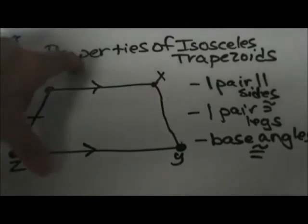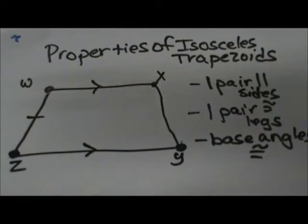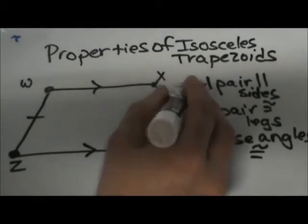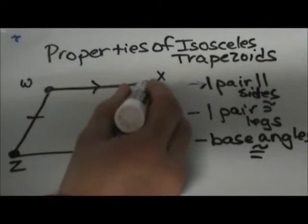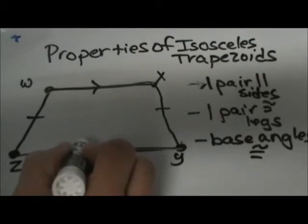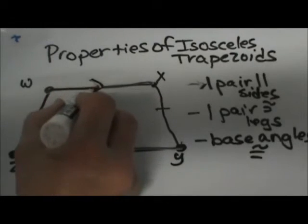It is a quadrilateral, meaning it has four sides, and a trapezoid also has one pair of parallel sides. That is the first property we're looking at. So we have WX is parallel to ZY. Those are the two sides that are parallel and we signify that with these arrows.